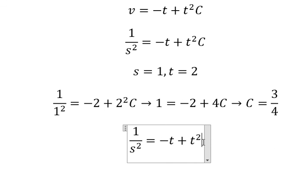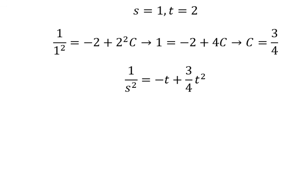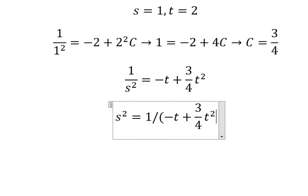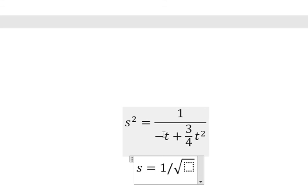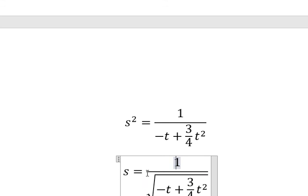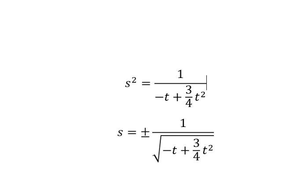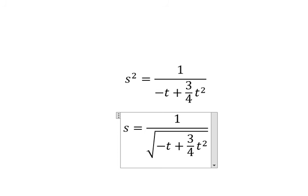We substitute c equals 3 over 4 back into the equation. Moving terms to their respective sides, we take the square root of both sides and include both positive and negative solutions. However, based on the initial condition, which requires a positive value, we eliminate the negative sign and keep only the positive solution. That is the final answer.